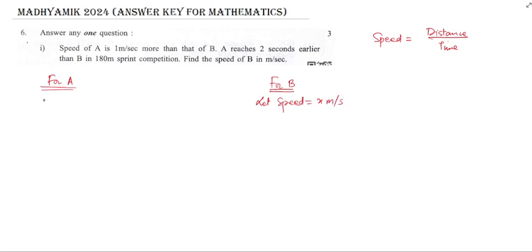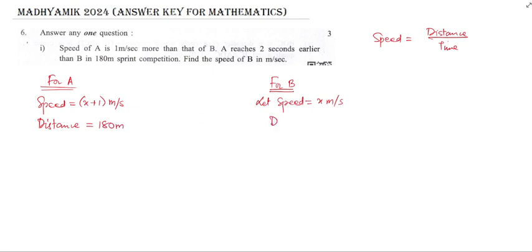So what is the speed of A? The speed of A is x plus 1 meter per second, since A is one meter per second faster than B. Both A and B have to run 180 meters. We have written the distance as well.